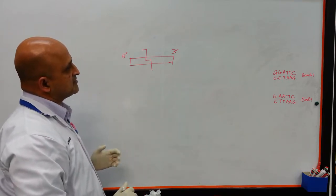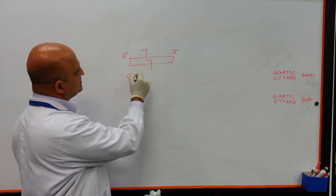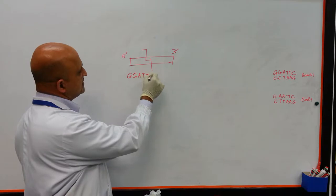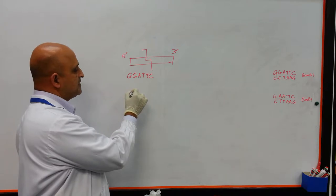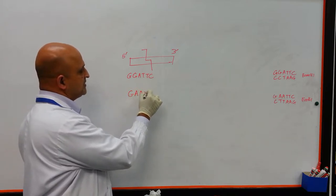For instance, the enzyme BAMH1 will cleave DNA at the location GGA-TTC. And the restriction enzyme ECO-R1, for instance, will cleave DNA at the location GGA-TTC.